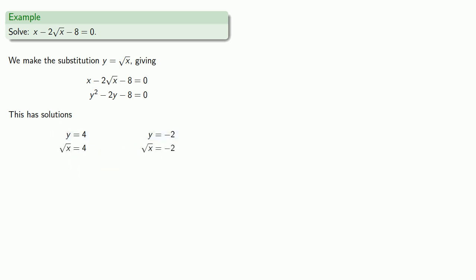So now let's try to solve these equations. So the first one, we have square root of x equals 4. So we can undo the square root by squaring. And we get a solution, x equals 16.